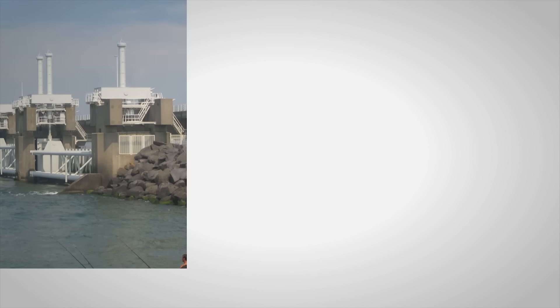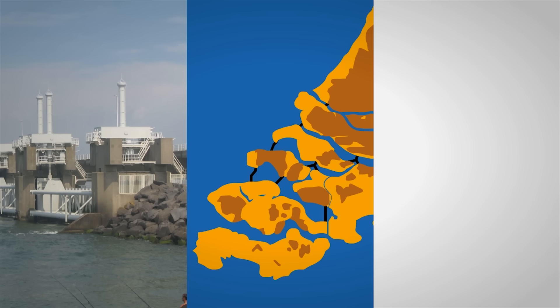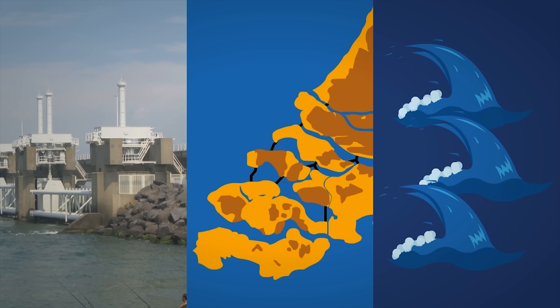The Delta Works are one of the seven modern wonders. They are the largest system of flood defenses in the world, and they are currently being used as a template for many countries on how they should defend themselves against rising sea levels.